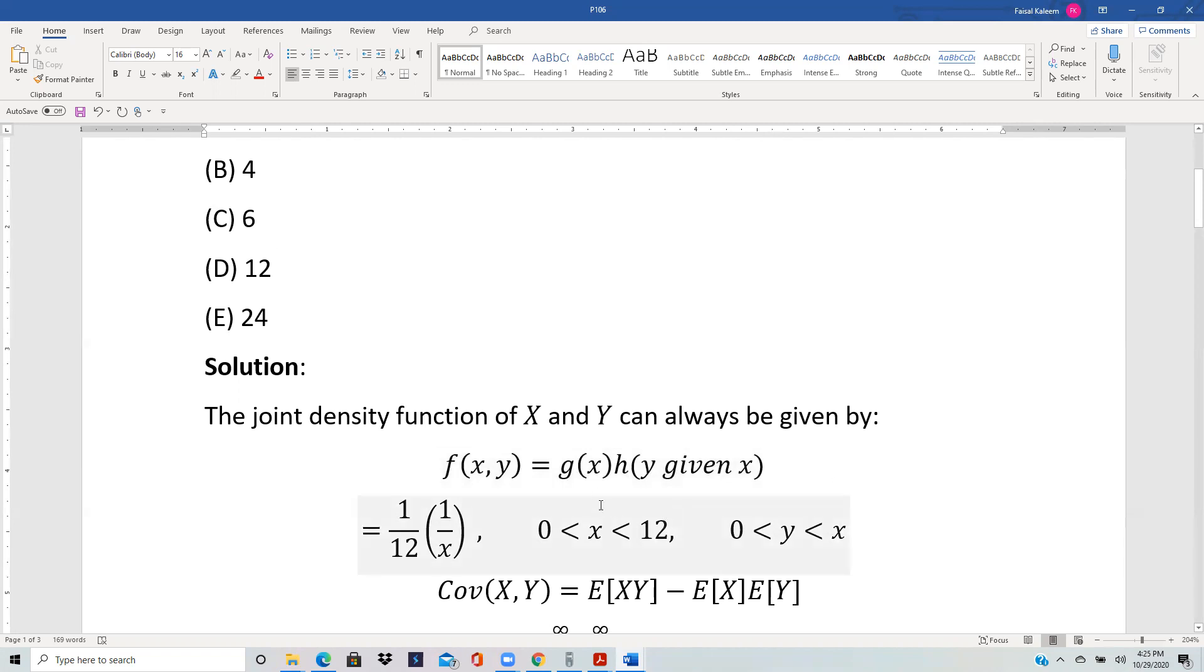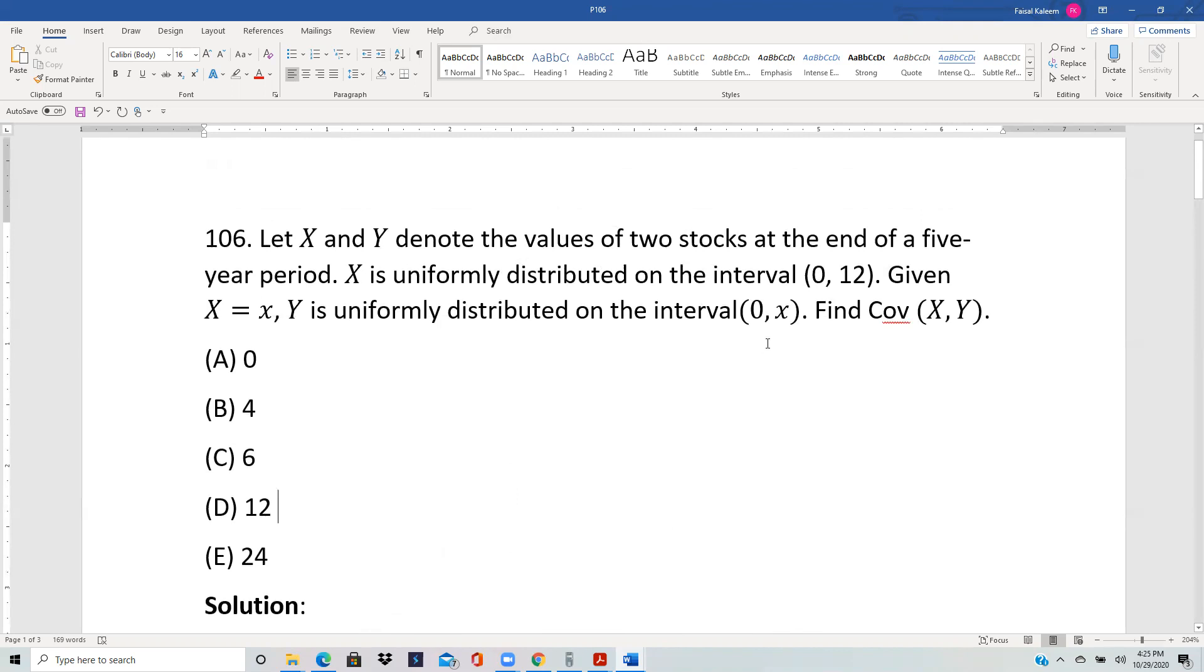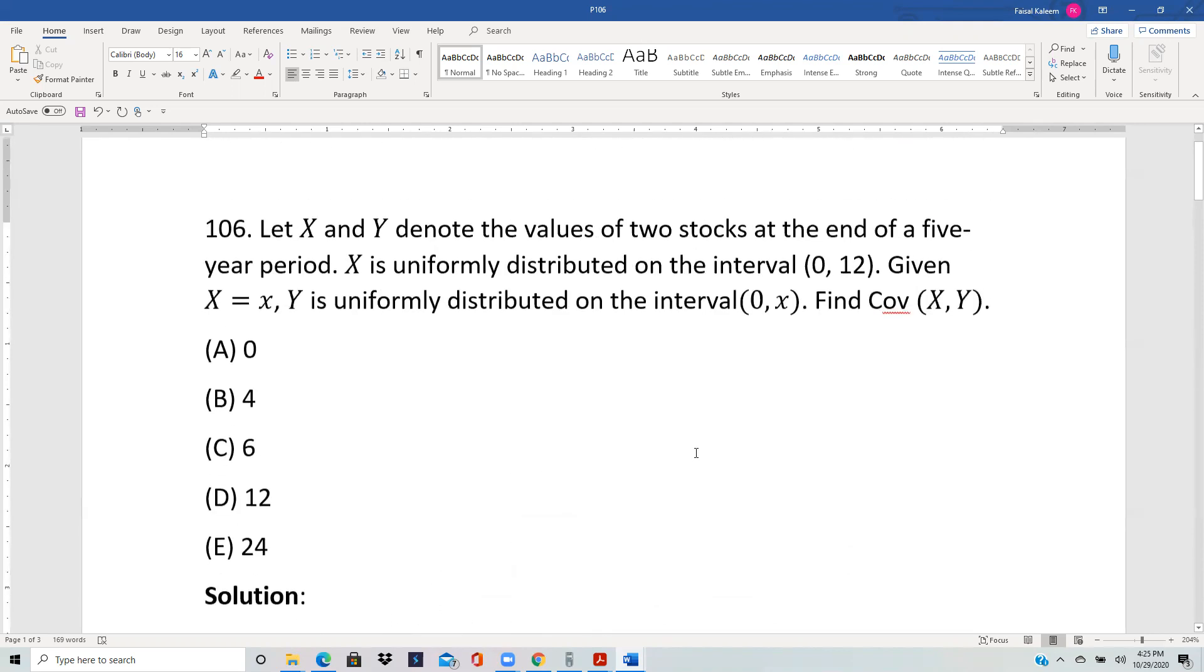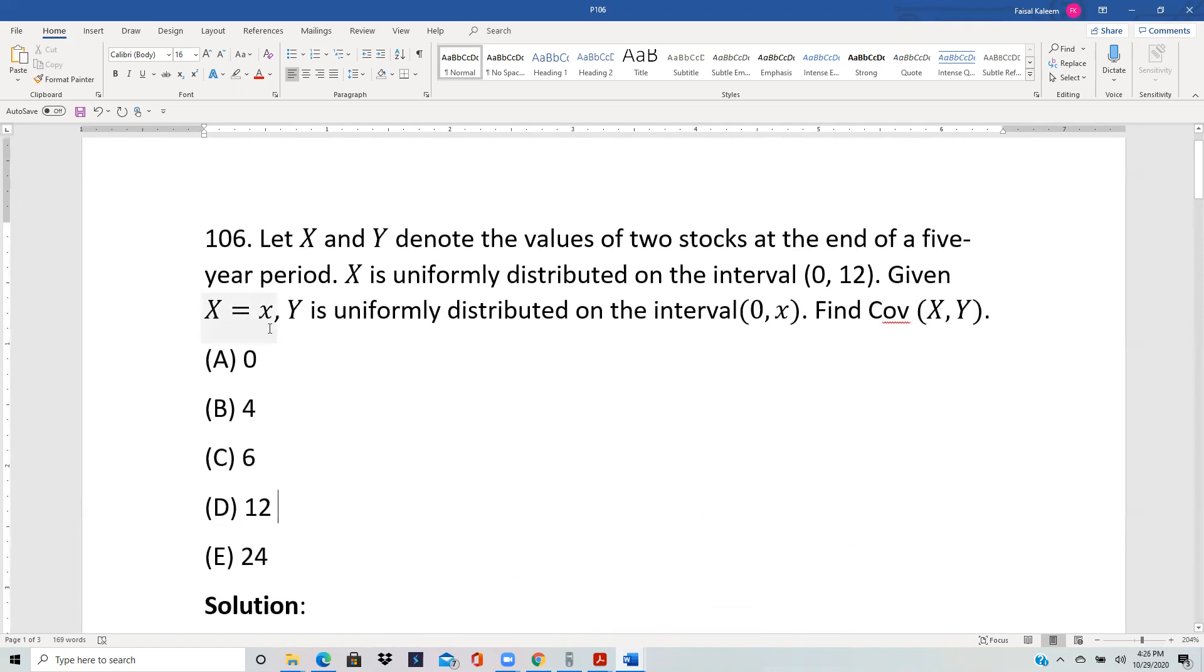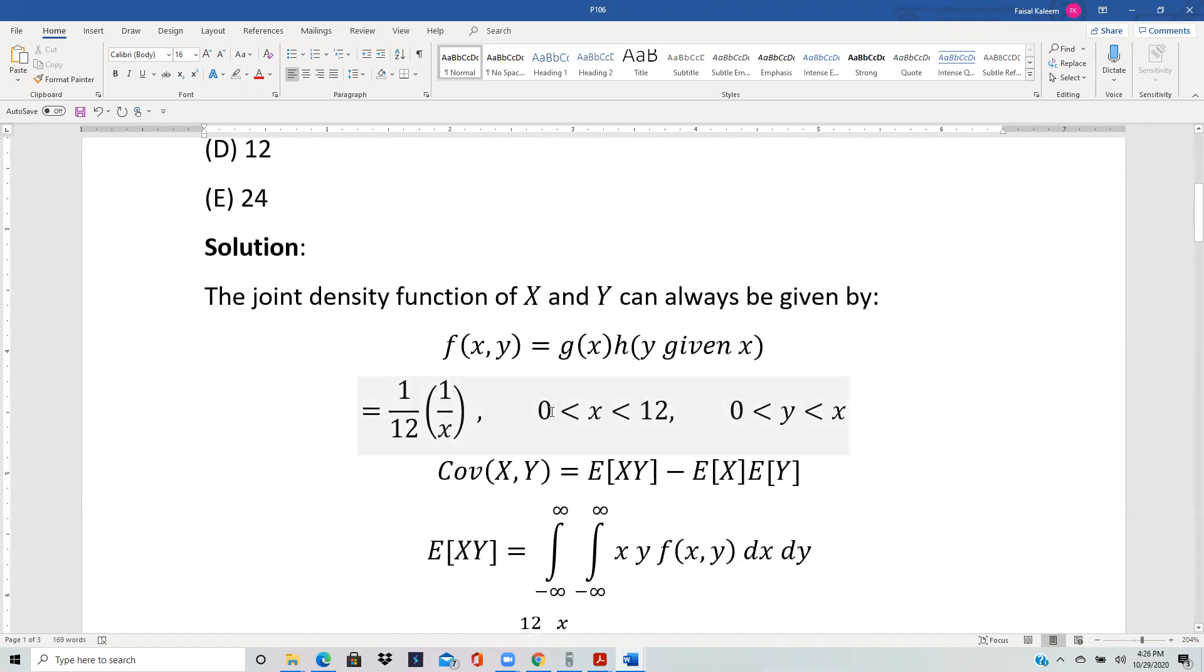Here g(x) is the PDF of x which is 1 over 12 minus 0. It's uniform, so it's 1 over 12 for x between 0 and 12. Given x equals x, we are told that y is uniform on [0,x], so it'd be 1 over x for y between 0 and x. That's what we have written.